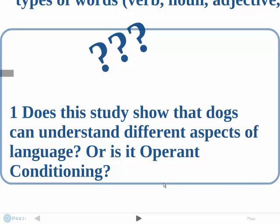My first question was: does the study show that dogs can understand different aspects of language, or is it operant conditioning? I chose to ask this because I wasn't quite sure of the answer. To me, it seemed like the dog's responses could just be operant conditioning and that it really didn't understand the words per se — but at the same time, I do believe it means that our ability to understand words may come from simpler cognitive abilities such as distinction or operant conditioning.